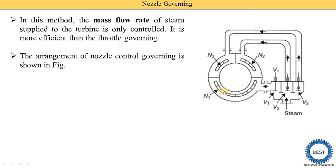This is the first set — in the first set there are a number of nozzles. This is the second set — in the second set there are four nozzles. In the third set of nozzles there are three nozzles. Each group or set is controlled by a different valve. For N1 group, valve V1 is provided. For controlling N2, valve V2 is provided. For controlling N3 set, valve V3 is provided.